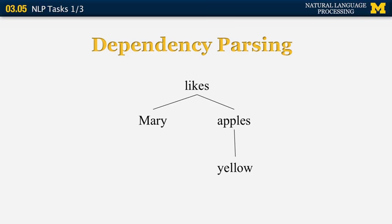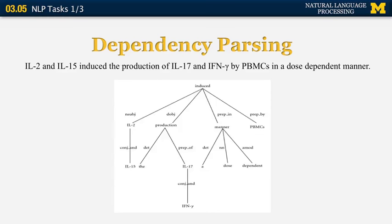In dependency parsing, we start with a sentence and produce a dependency structure as output. Here's an example from a paper on biological natural language processing: a sentence was converted into a dependency tree, and then rules were applied to the dependency tree to determine whether there was an interaction between any two particular proteins in that sentence. The dependency structure was what made it possible to understand how those proteins are related.